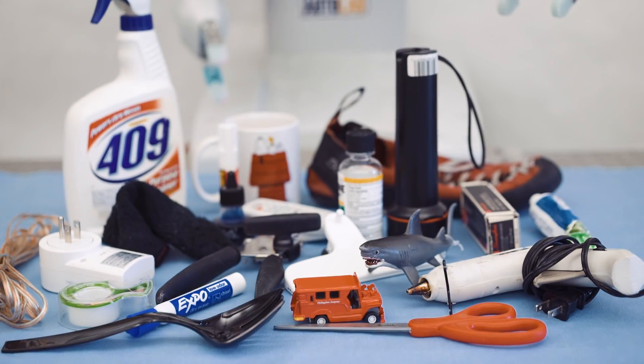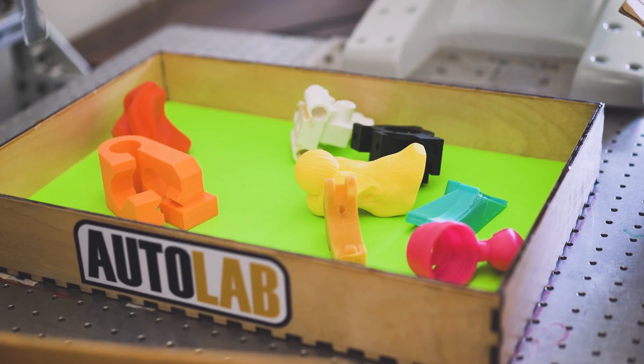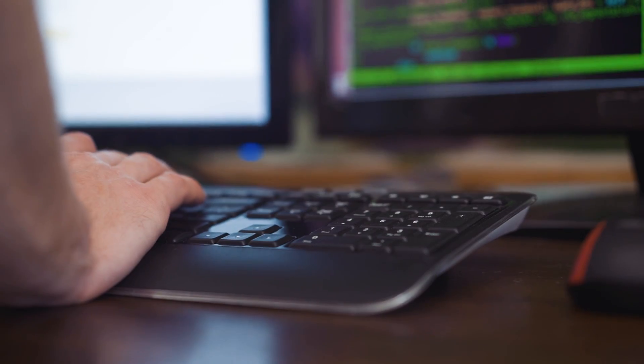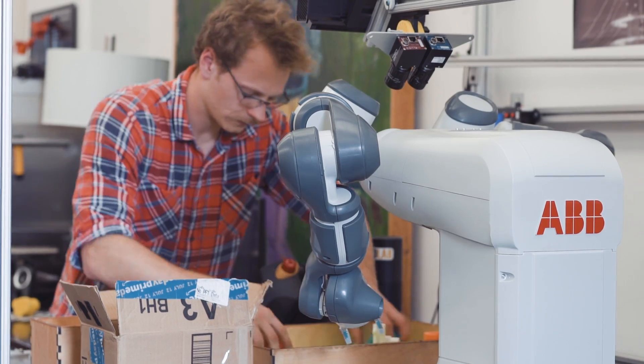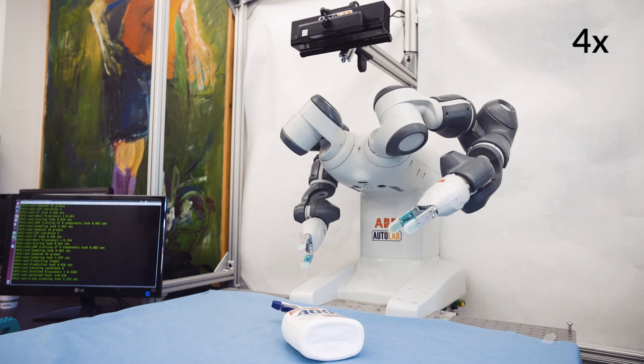Robots in homes and warehouses must grasp and manipulate a huge variety of objects. At UC Berkeley's Automation Sciences Lab, we're developing the Dexterity Network, which combines deep learning with cloud robotics to learn robust grasping policies.